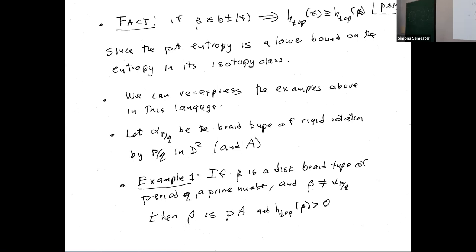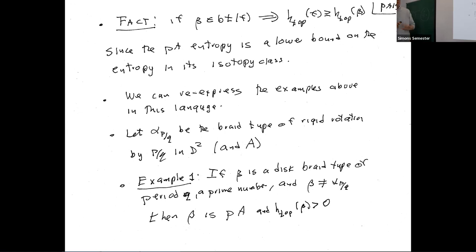Because of the conjugacy theorem, the pseudo-Anosov entropy is the lower bound on the entropy in its isotopy class. Furthermore, because of Katok's theorem, you can use horseshoes to pull out periodic points, so you can arbitrarily closely approximate the entropy of F — if it's C^1+alpha — by entropies of braid types.